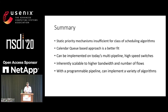To summarize: static priority mechanisms are sometimes insufficient to implement a class of scheduling algorithms, and the old approach of calendar queues is a better fit. They can be implemented on today's multi-pipeline high-speed switches, are inherently scalable to high bandwidths irrespective of the number of flows, and in conjunction with a programmable pipeline can implement a wide range of scheduling algorithms.